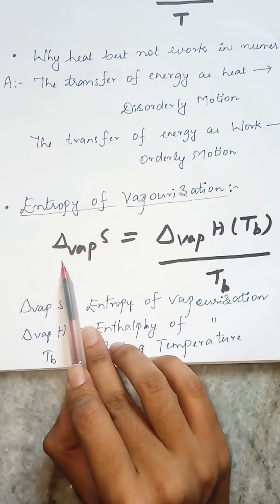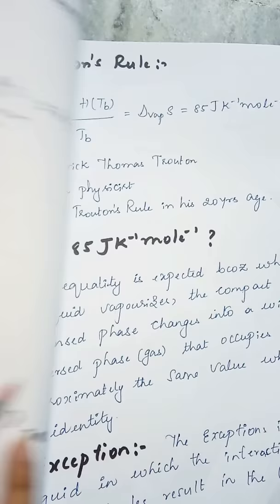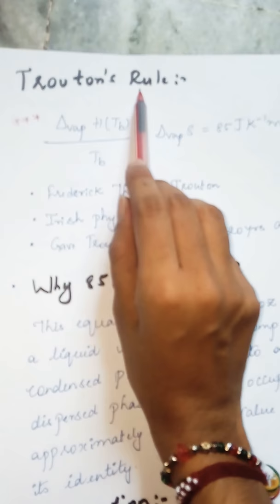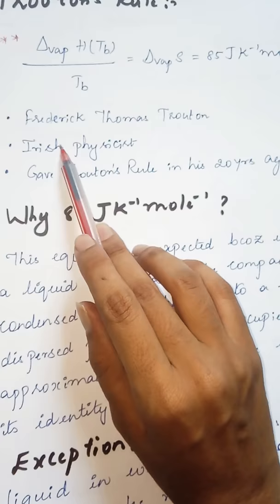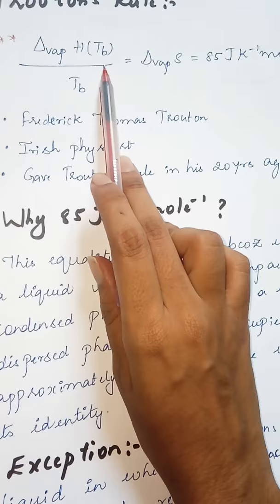Now comes Trouton's Rule. This rule was given by the scientist named Frederick Thomas Trouton, and he is an Irish physicist. Great thing is he gave this rule when he was doing his undergraduate, that is 20 years of age.